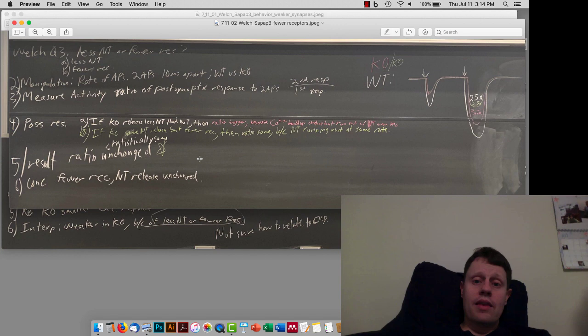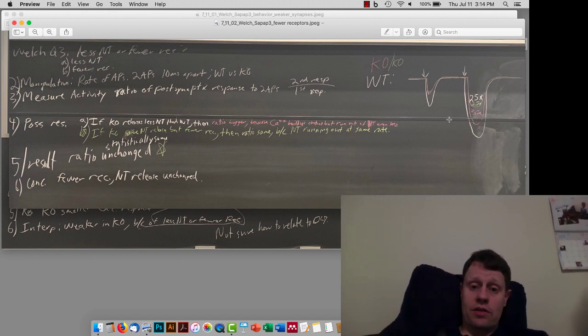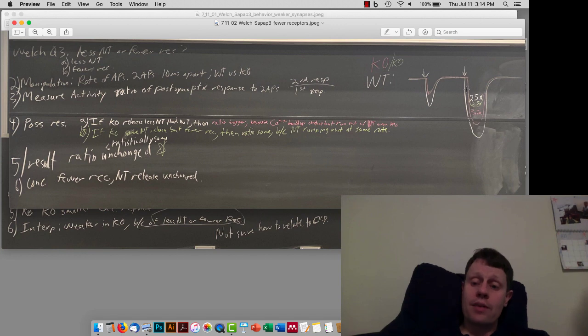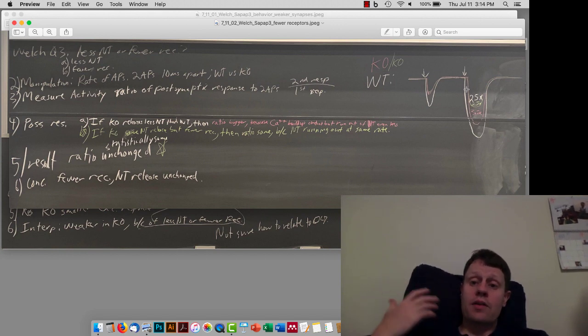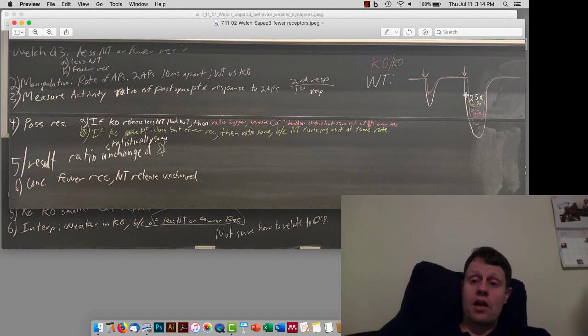And then, what they measure is the ratio of responses. So, we already know the first response is going to be smaller. And then, if there are fewer receptors, then the second response will be smaller, and in the same ratio as the first. It turns out that for the wild-type synapses, the ratio is about 2.5. That means that the second response is about two and a half times as big as the first.